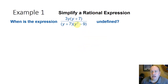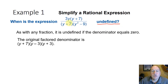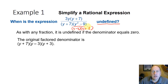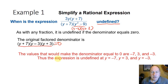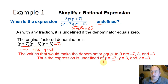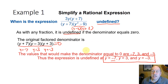To find out when this expression is undefined: rational expressions are undefined when the denominator equals 0. The original factored denominator is (y plus 7)(y minus 3)(y plus 3), because y squared minus 9 factors to (y minus 3)(y plus 3). Using the zero product property, y plus 7 = 0 gives y = negative 7; y minus 3 = 0 gives y = 3; y plus 3 = 0 gives y = negative 3. All three values make the expression undefined.